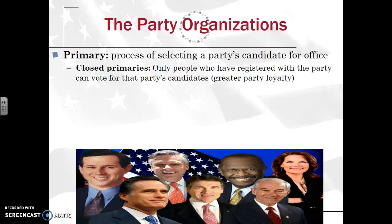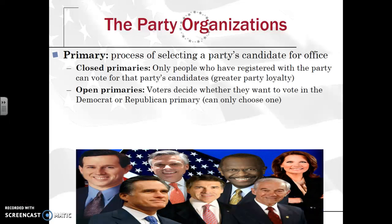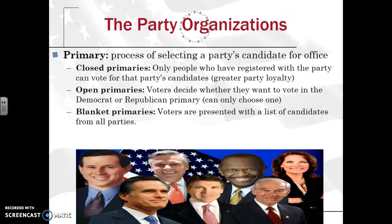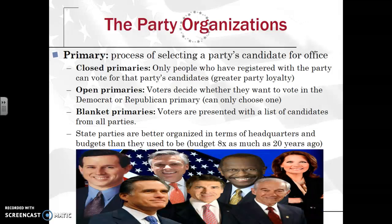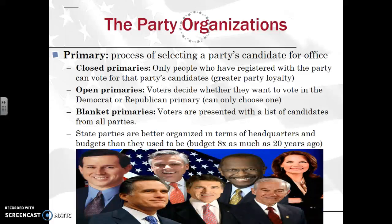When looking at the process of selecting a party's candidate for office, you have closed primaries, in which only registered Republicans or only registered Democrats are allowed to vote — this encourages greater party loyalty. You also have open primaries, which allow voters to decide whether they want to vote in the Democratic or Republican primary that day, choosing only one. Then you have blanket primaries, where voters are presented with a list of candidates from all parties; you do not see many states with blanket primaries. You need to know these three different types of primaries, and knowing that closed primaries encourage greater party loyalty will help you immensely. States have also become better organized over the past 20 years as budgets dedicated towards campaigning have risen eight times as much.